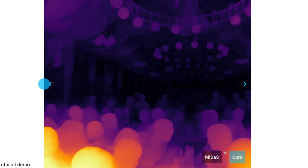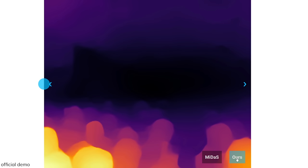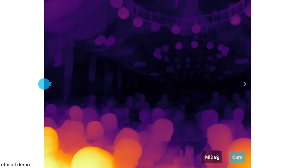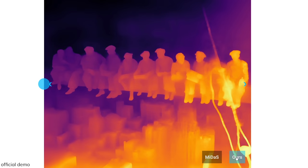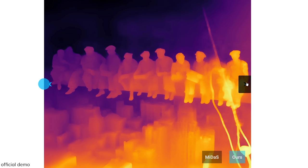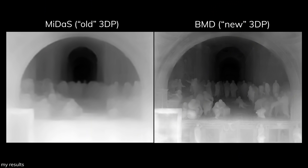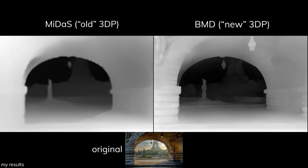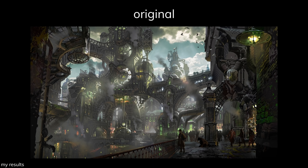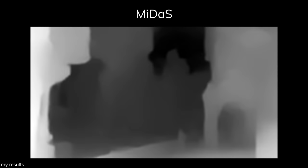I was actually wishing this would get implemented into 3DP, and surprisingly without much delay, the author of 3DP really did update right away and implemented it into their code. Looking at the difference in the older depth map that 3DP uses — called Midas — versus BMD, you can already tell there's a huge difference between them, which is as promising as the ones on BMD's official demos.